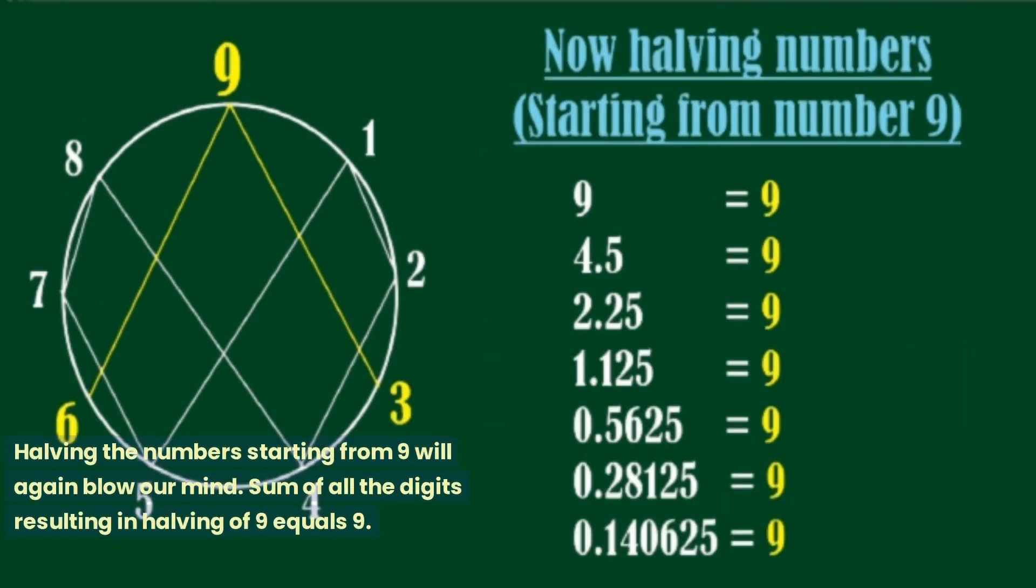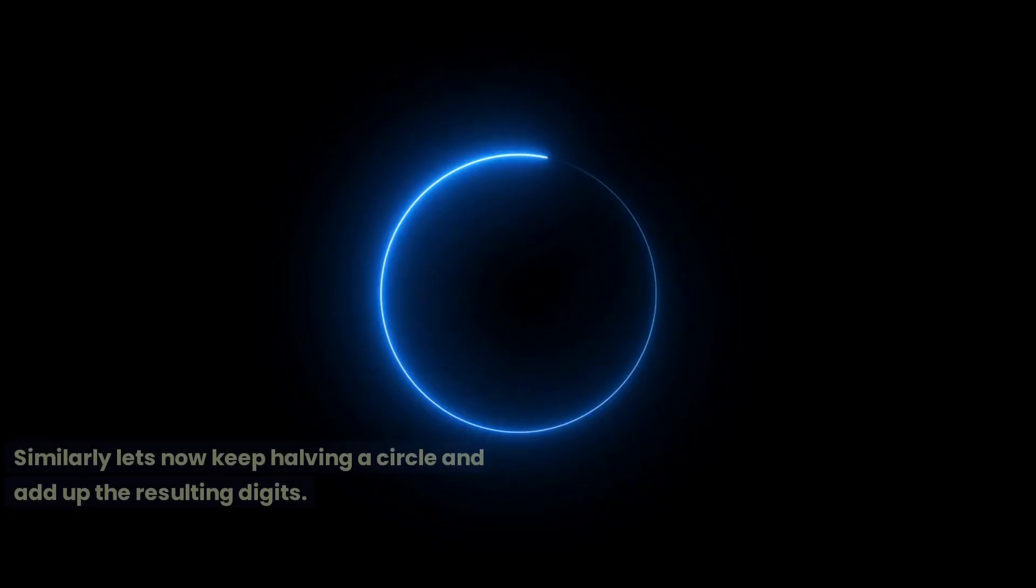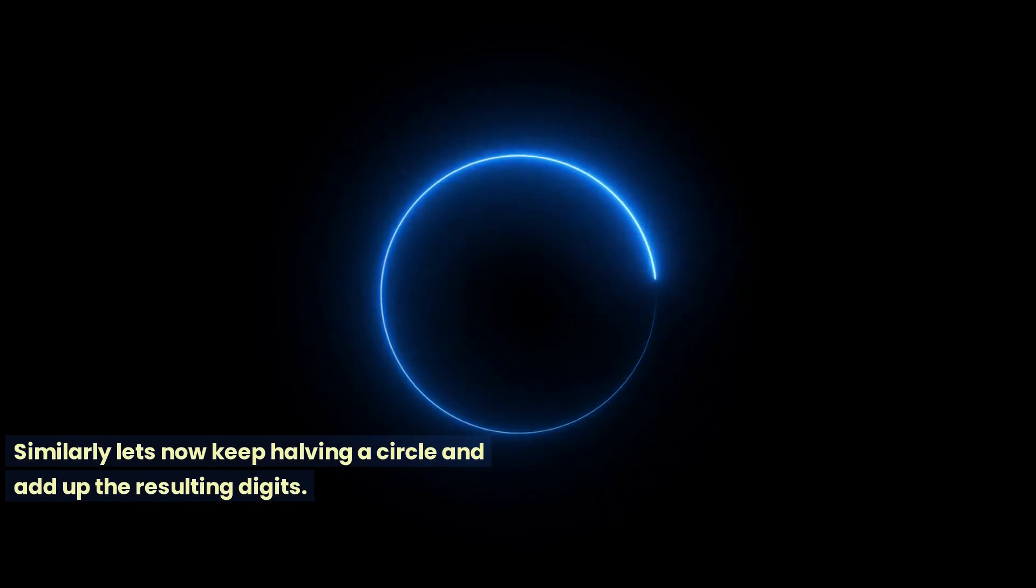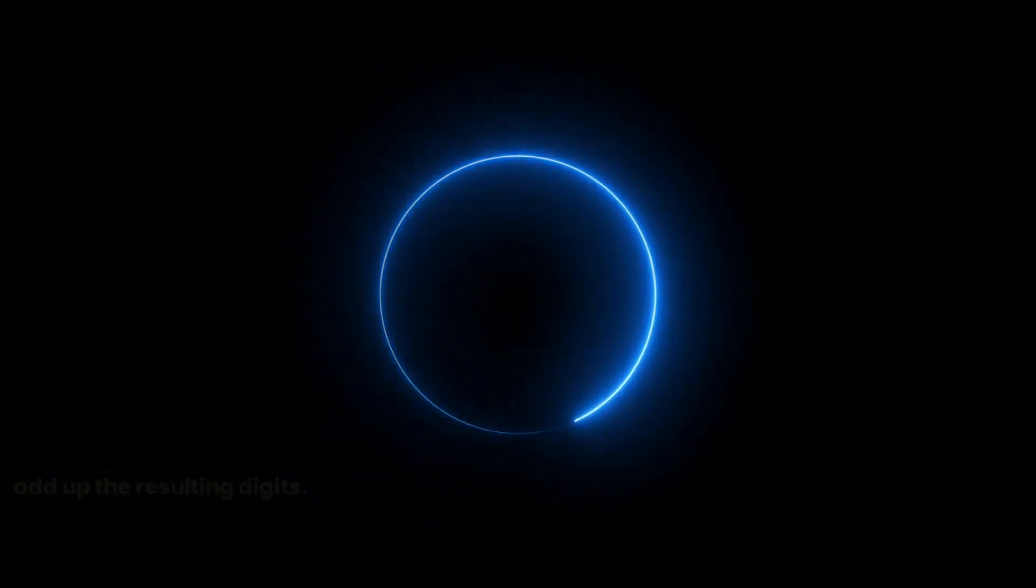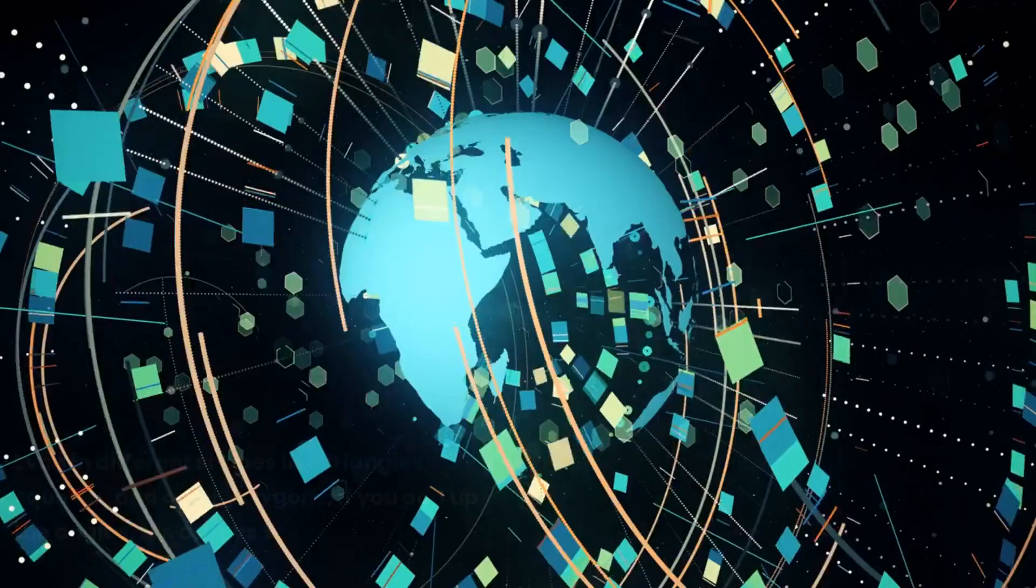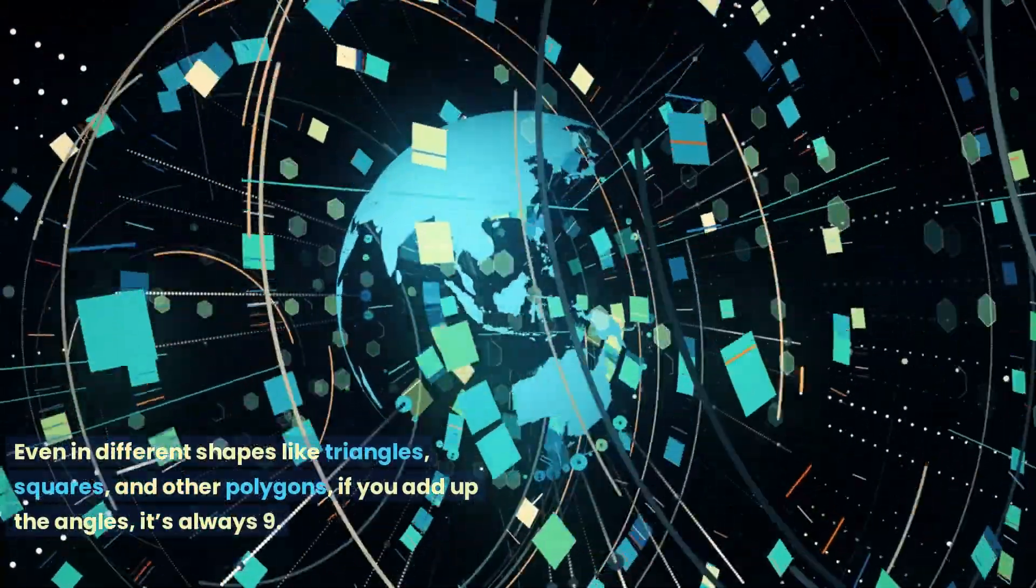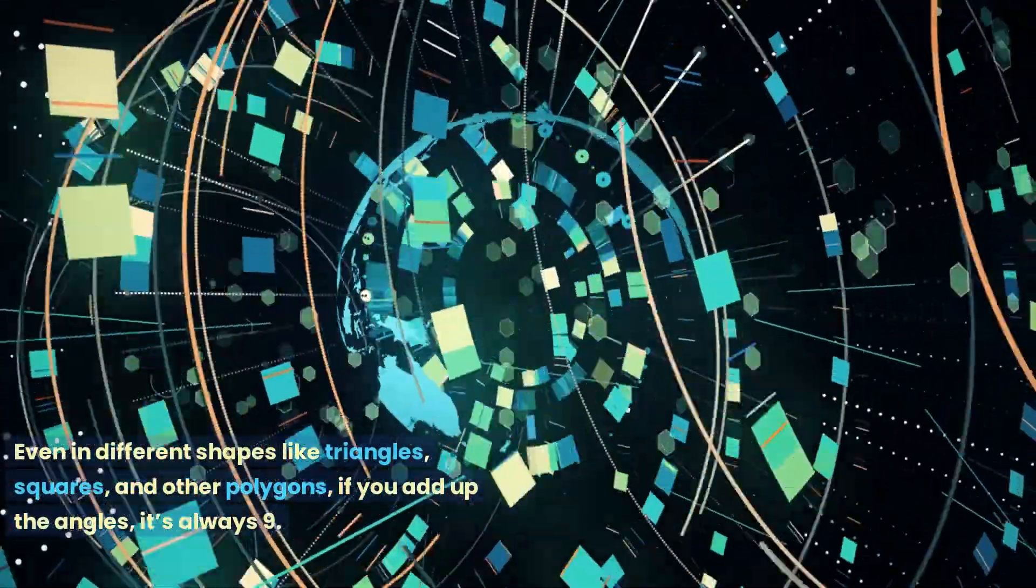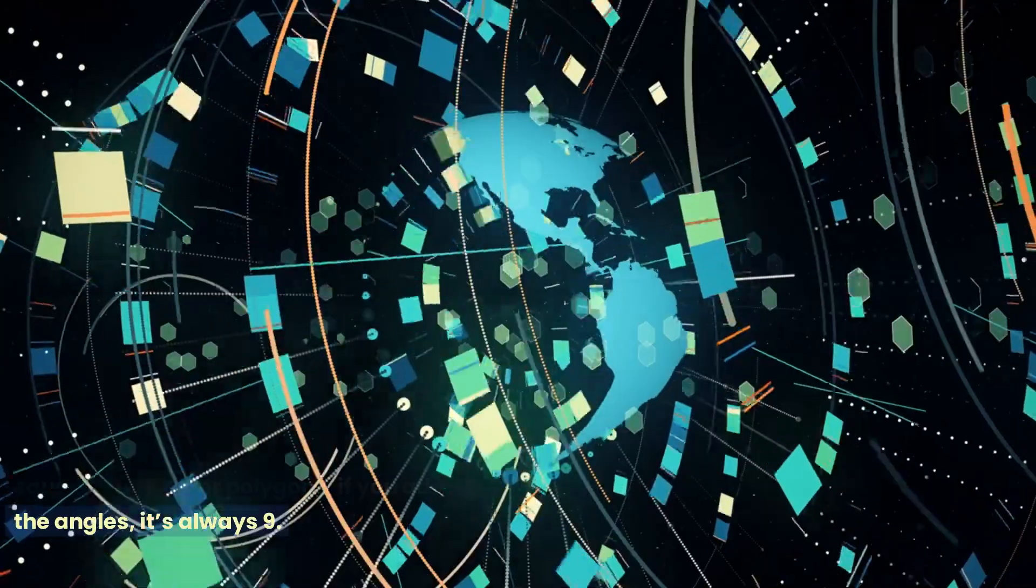Halving the number starting from 9 will again blow our mind. The sum of all the digits resulting from halving 9 equals 9. Similarly, if you keep halving and add up the resulting digits, the result is mind-blowing. If you keep adding the results of halving, the result is always number 9 till infinity. Even in different shapes like triangles, squares, and other polygons, if you add up the angles, it's always 9.